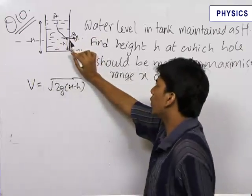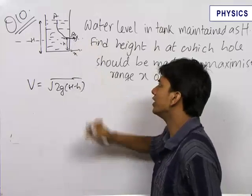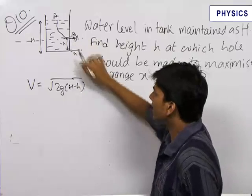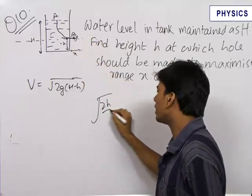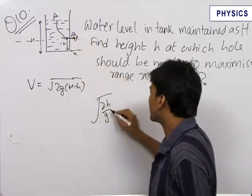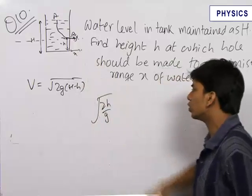Now, the water coming out has velocity only in the horizontal direction. The initial velocity in the vertical direction is zero. Therefore, the time taken to fall a distance h in the vertical direction under gravity is √(2h/g).